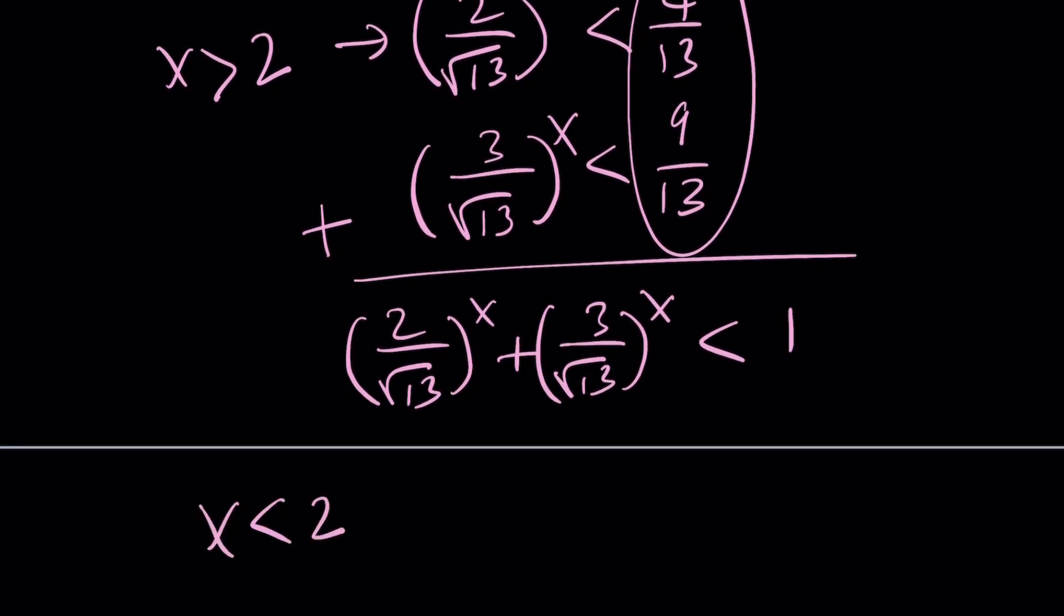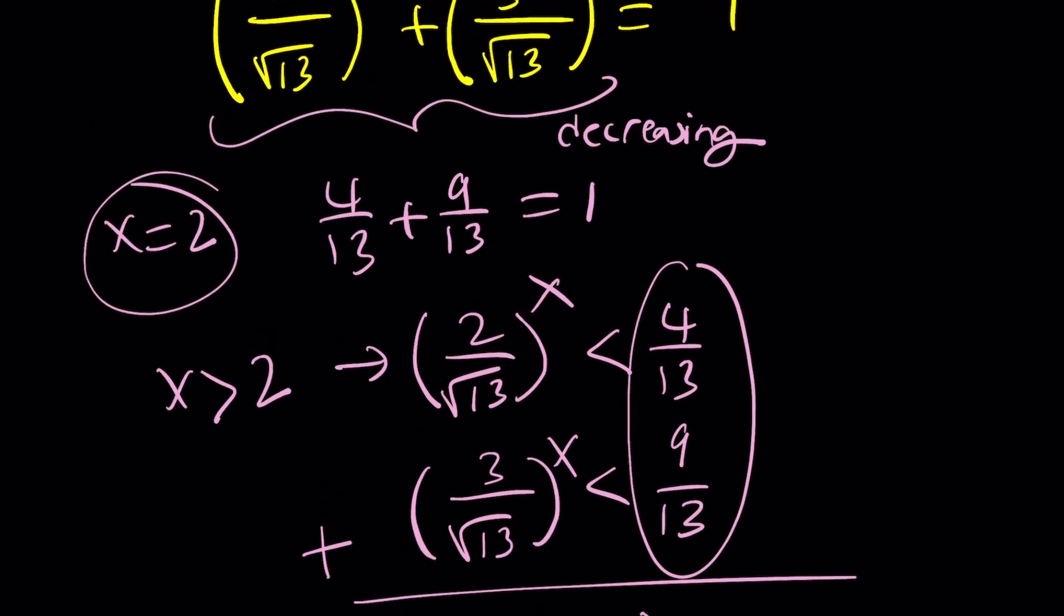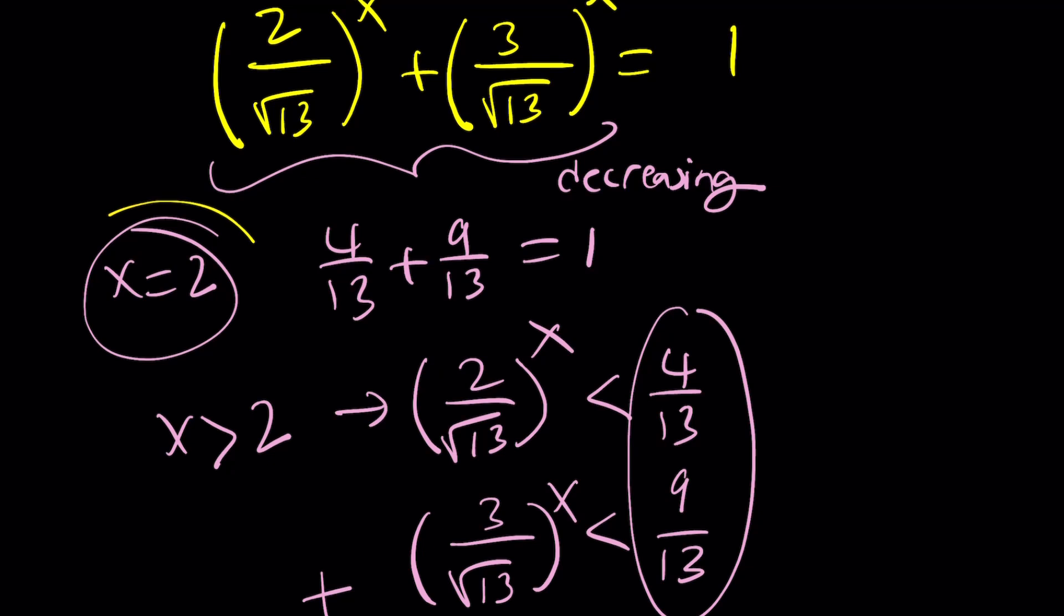If x is less than 2, similarly, this sum is going to be greater than 1. You can test it out with x equals 1, x equals 1 half, whatever. So the equality is only attained at x equals 2, which is the only solution.